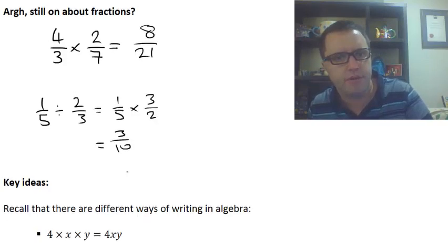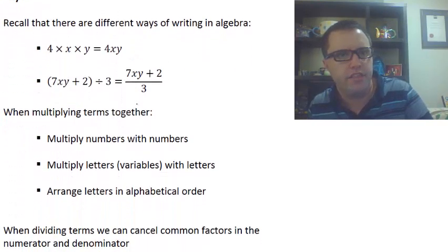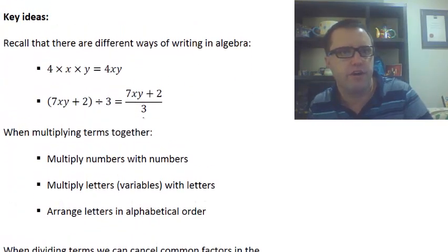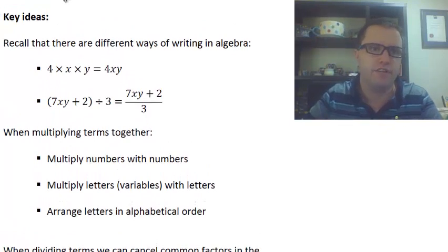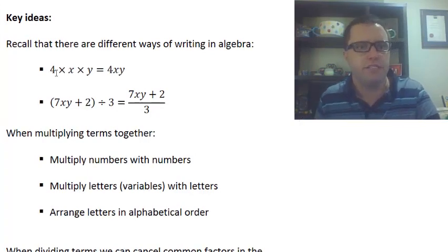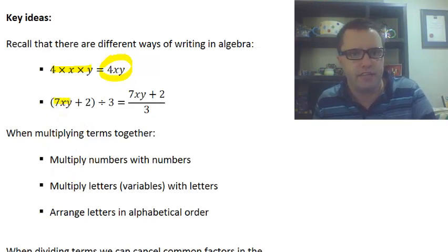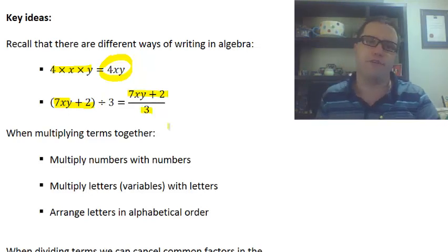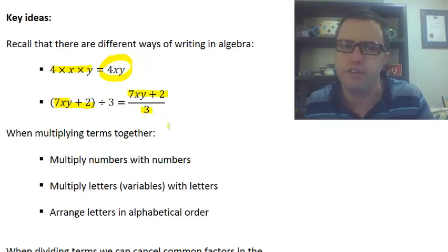Just remember from a couple of videos ago that there are different ways of writing in our algebra. Instead of 4 times x times y, we write 4xy. For example, instead of (7xy + 2) divided by 3, we'd have (7xy + 2)/3. So that's our different ways of writing algebra.